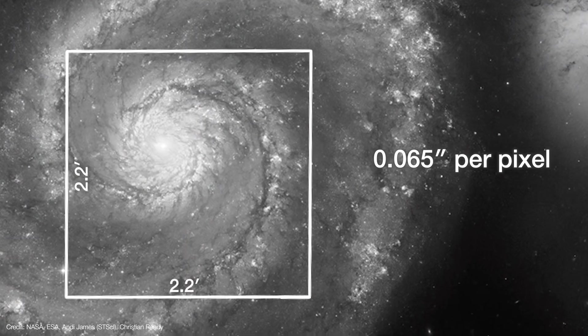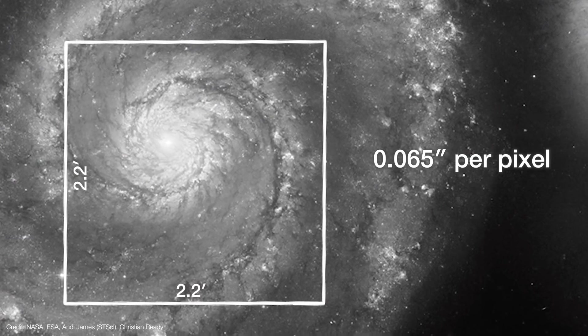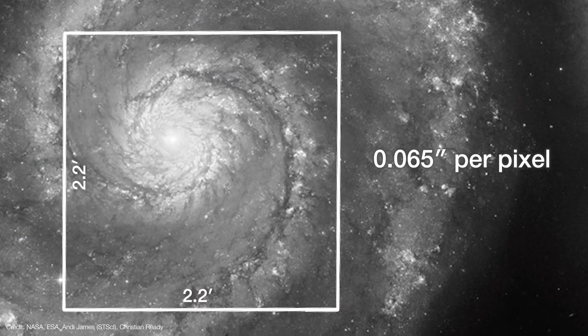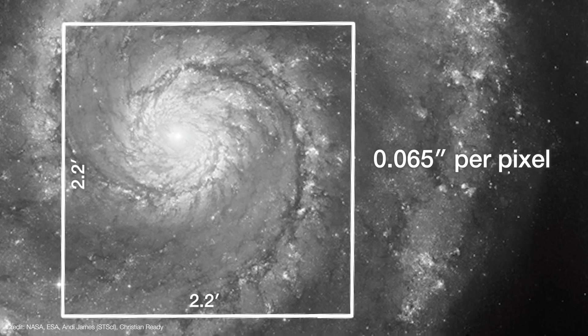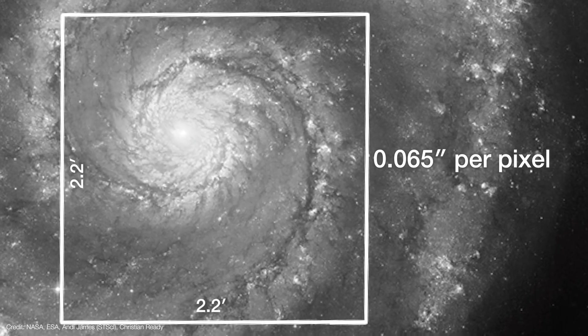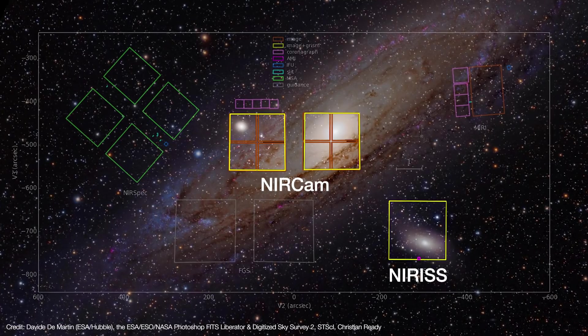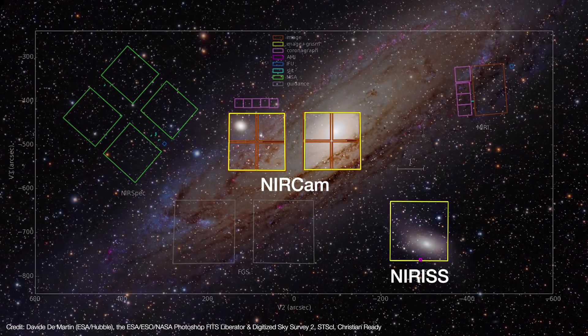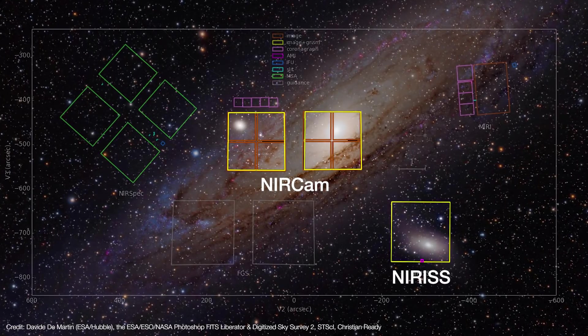And finally, NIRISS's imaging mode allows high-resolution, multi-wavelength imaging over its entire field of view. That's with an imaging resolution of just 0.065 arc second per pixel. And it can operate as a second or technically a third camera in parallel with NIRCam. Not bad for a spectrograph.